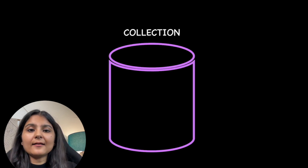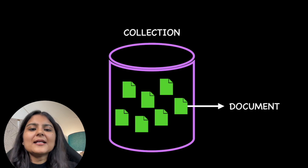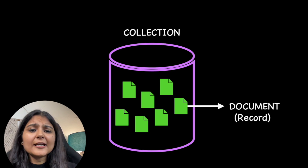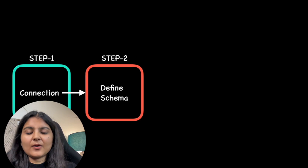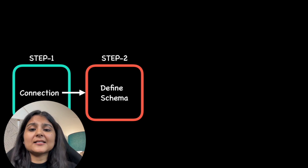Before connecting, let's understand how data gets stored in MongoDB. The data gets stored in a collection, just like how we store data in tables in SQL databases. Within this collection we have several documents, where a document is an individual record. The process is: first we establish a connection to our MongoDB database, then the next step is to define a schema — meaning we define a blueprint of the documents that we are going to store, including the type, whether it needs to be unique, whether it is mandatory, and so on.